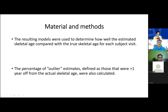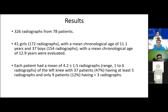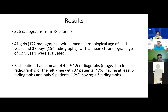The resulting models were used to determine how well estimated skeletal age compared with true skeletal age for each subject visit. Outliers were defined as estimates more than one year off from actual skeletal age. Results included 326 radiographs: 41 girls with 172 x-rays (mean chronological age 11.1 years) and 37 boys with 152 x-rays (mean chronological age 12.9 years), each with a mean of 4.2 ± 1.5 x-rays.